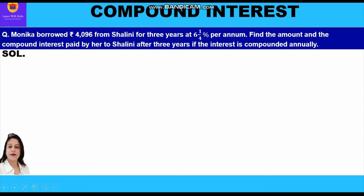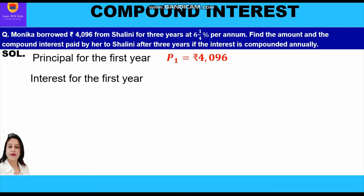Let's start with the solution. The principal for the first year is rupees 4096 — the amount of money which Monica had borrowed from Shalini. The interest for the first year will be calculated on this principal at the rate of 6¼ percent, or 25 by 4 percent, of 4096.